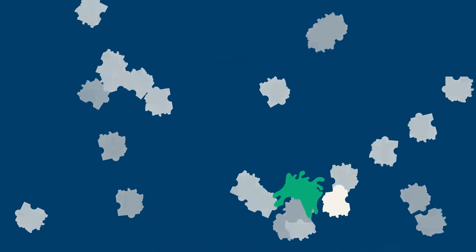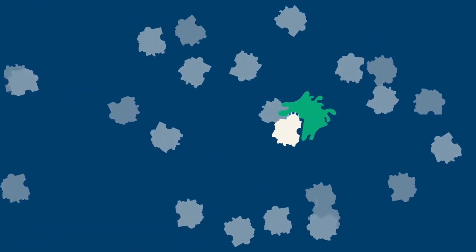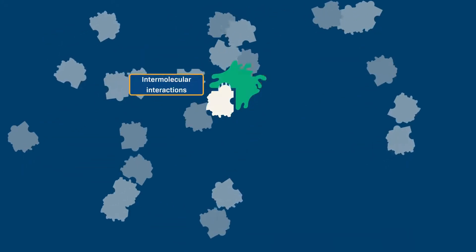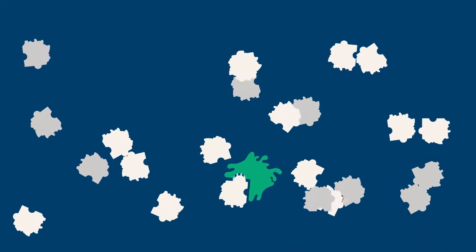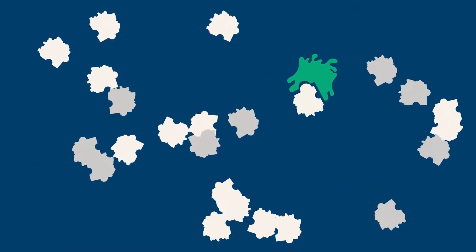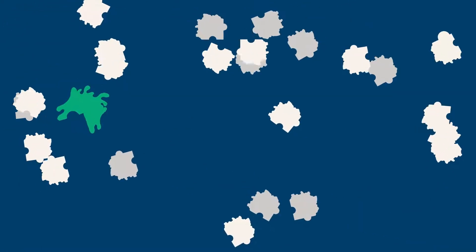If two molecules with poorly matched surfaces collide, only a few weak intermolecular interactions will form between them. The thermal motion of the molecules rapidly breaks these weak interactions, and the molecules separate.